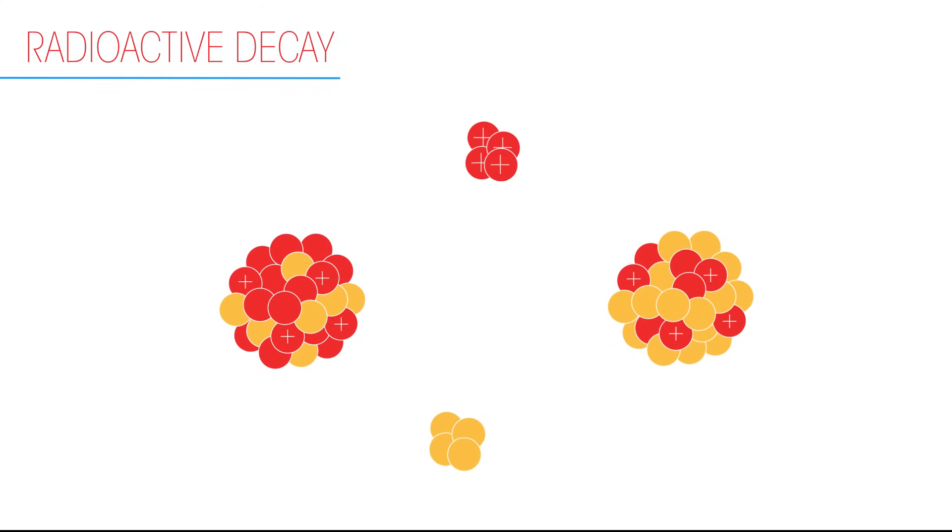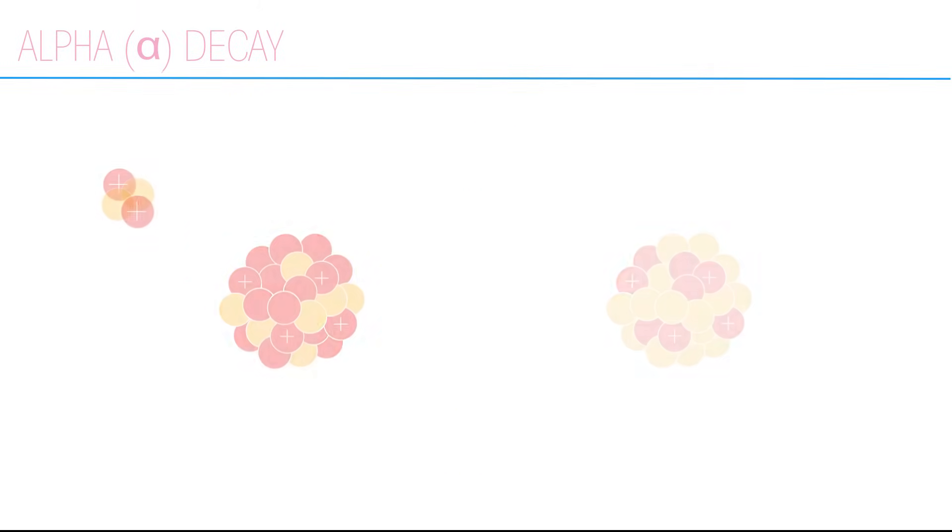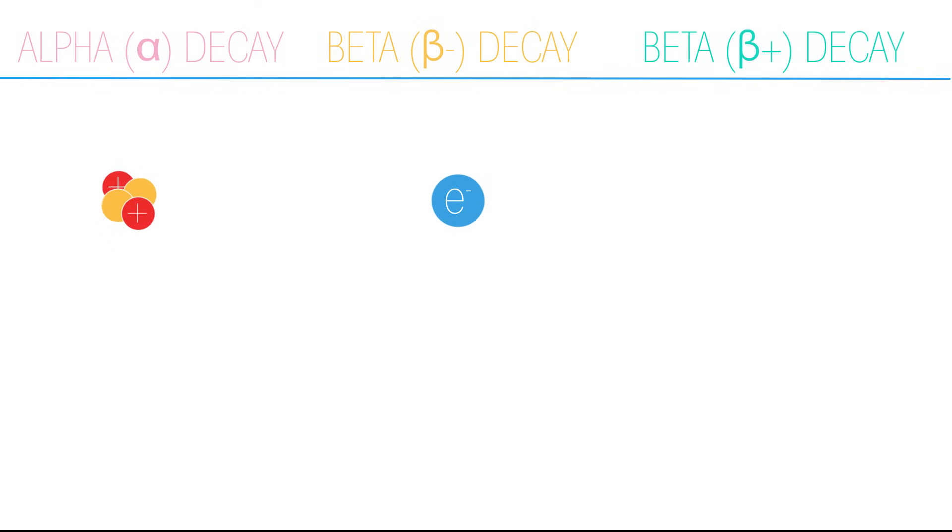There are three types of decay: alpha decay, beta minus decay, and beta plus decay.